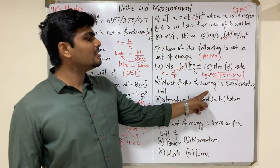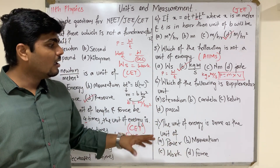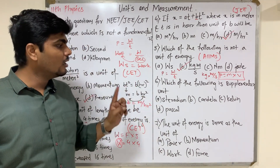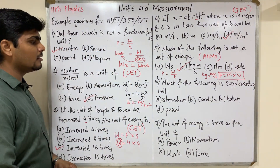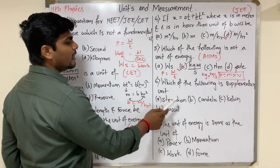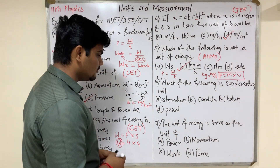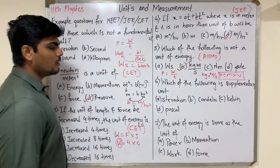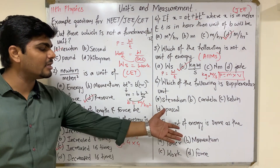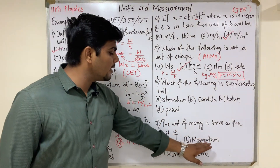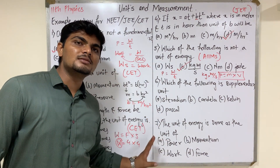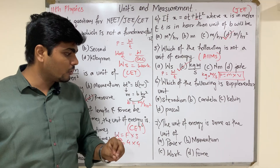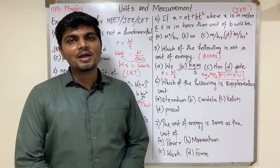Question 6: Which of the following is a supplementary unit? The options are steradian, candela, kelvin, and pascal. Please comment your answer in the comment box — I am not going to give the answer here. Question 7: The unit of energy is the same as the unit of which quantity? Options are power, momentum, work, and force. Please comment your answers for questions 6 and 7 below.